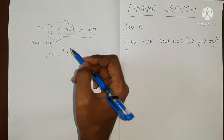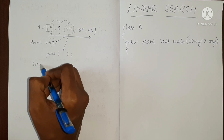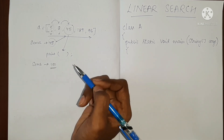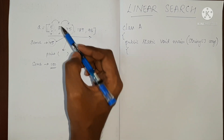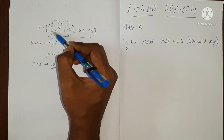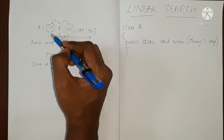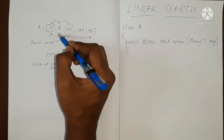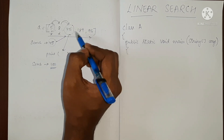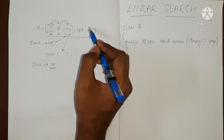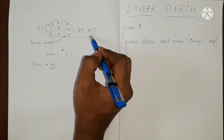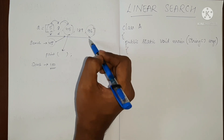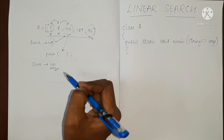What if we are searching for some value which is not present in the array? Let's say we are searching for value 100. We will start from index number 0, check if it is equal — it is not. We go to the next location — not equal. Next location, not equal, and we keep going. When we reach the last index and we still don't find this value...